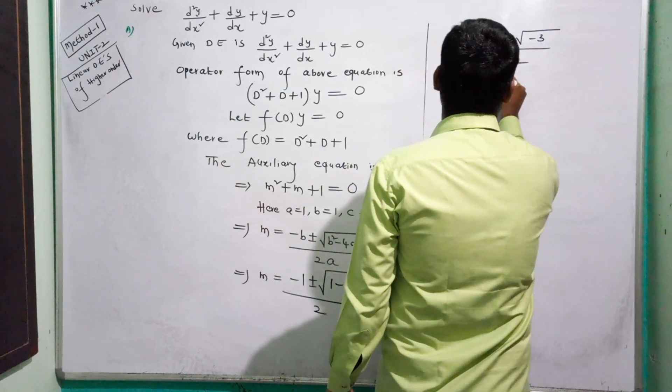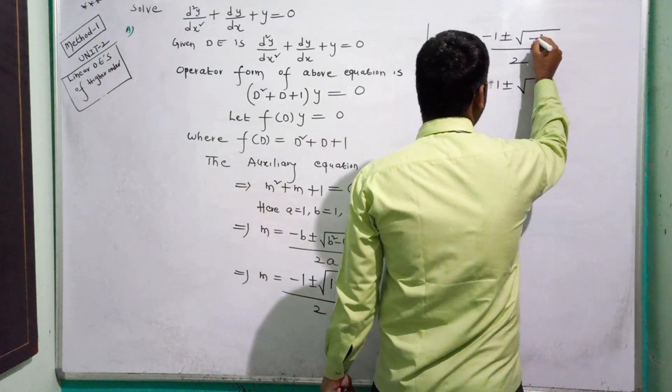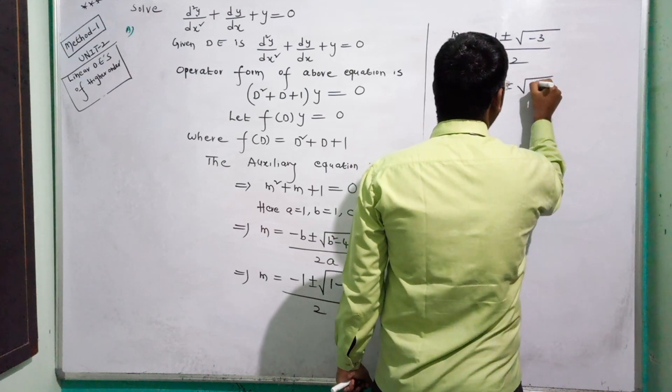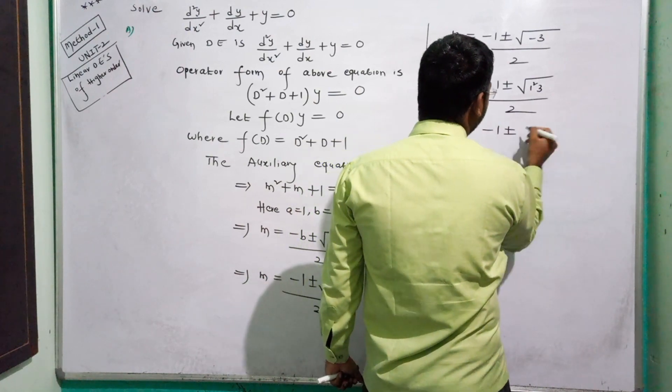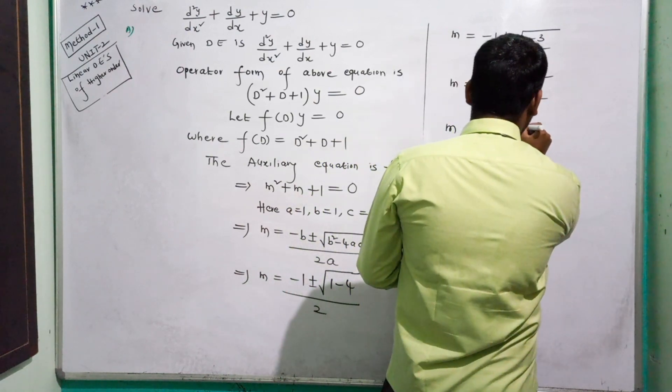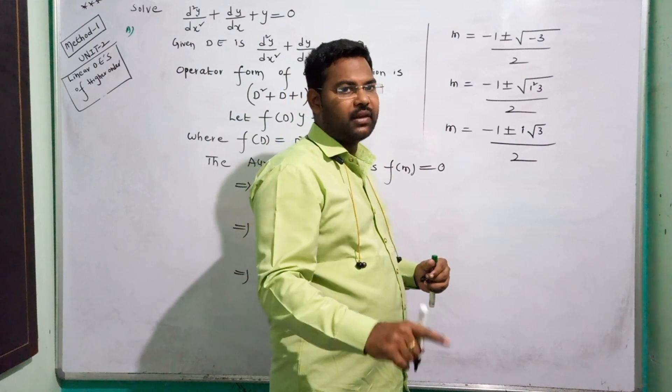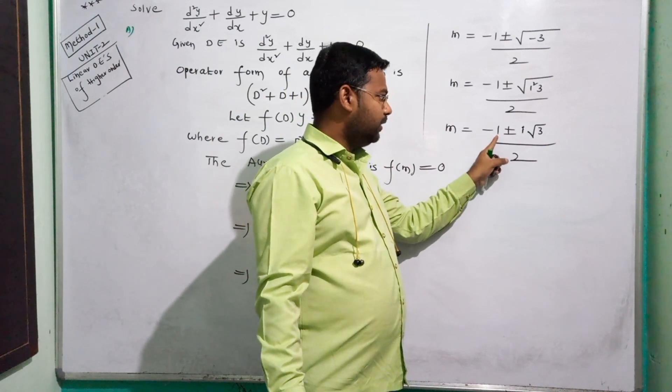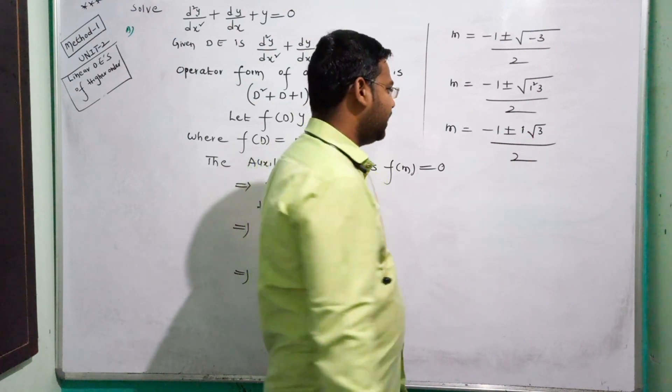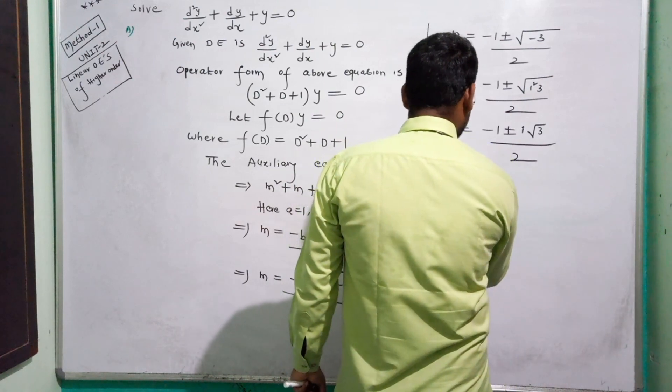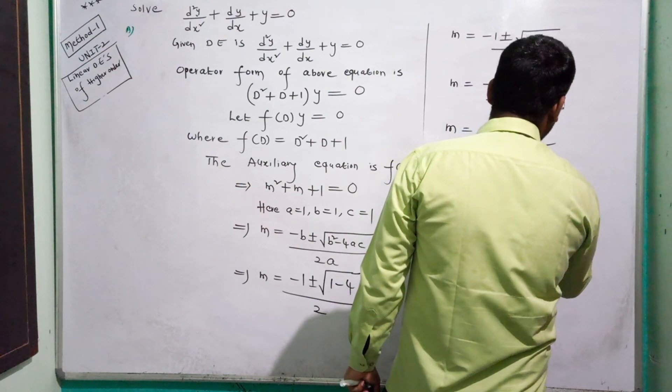So M equals minus 1 plus or minus square root of minus 3, divided by 2. M equals minus 1 plus or minus i root 3, divided by 2. M equals minus 1 by 2 plus or minus i root 3 by 2.